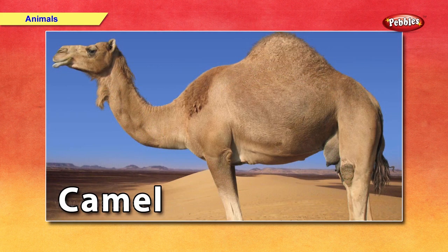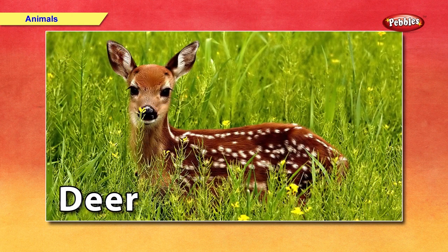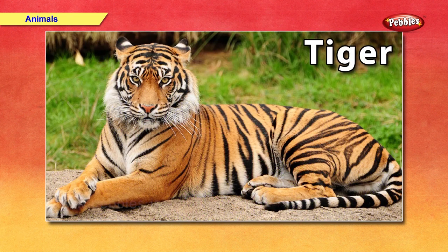Camel — people load their luggage on the back of the camel and travel in the deserts. Deer — a deer is a very beautiful animal and can run very fast. Tiger — a tiger is a big animal from the cat family. A tiger has beautiful stripes on his body and lives in the jungle, so he is called a wild animal. Tiger is our national animal.